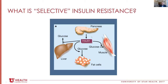Insulin is released from pancreatic islets when glucose levels reach a critical threshold. Thinking about insulin resistance: most people would say it's the inability of insulin to work effectively. Looking at this simple schematic, insulin is not able to bring glucose into fat, bring glucose into muscle, and block glucose delivery from the liver. So we're comfortable with that as a definition of insulin resistance.